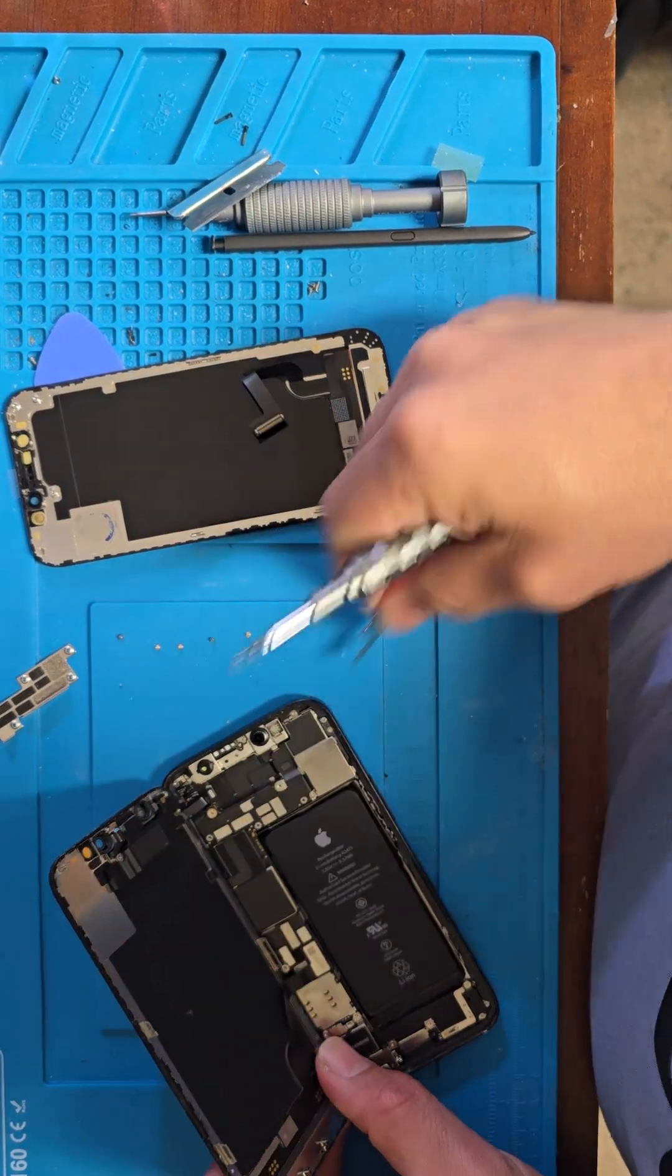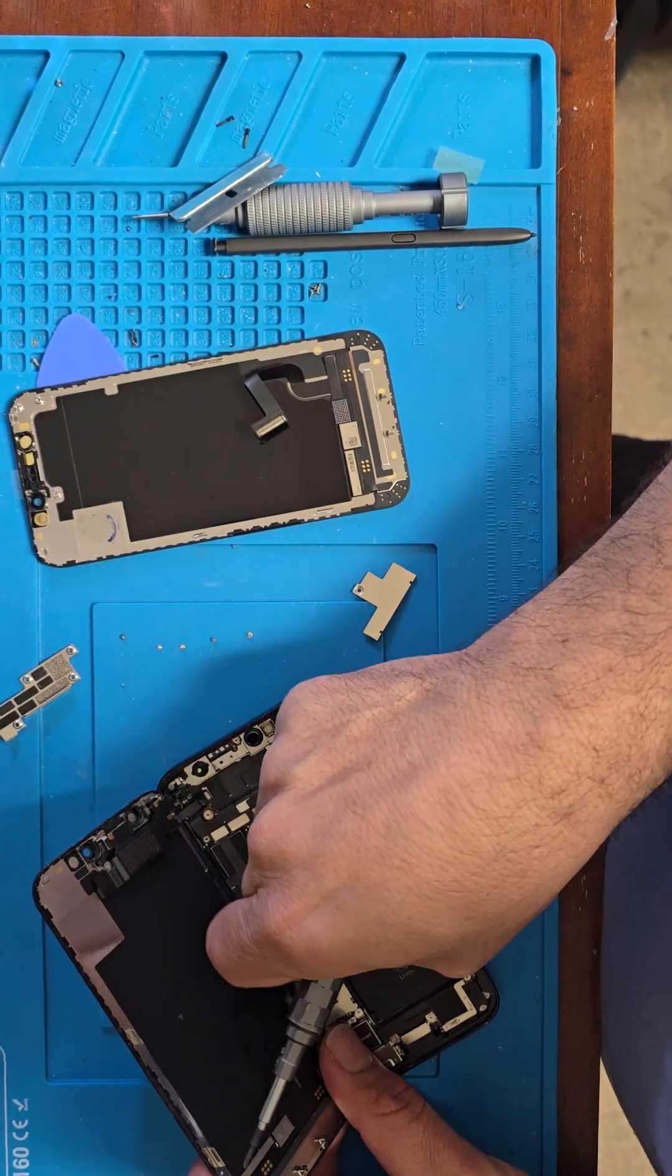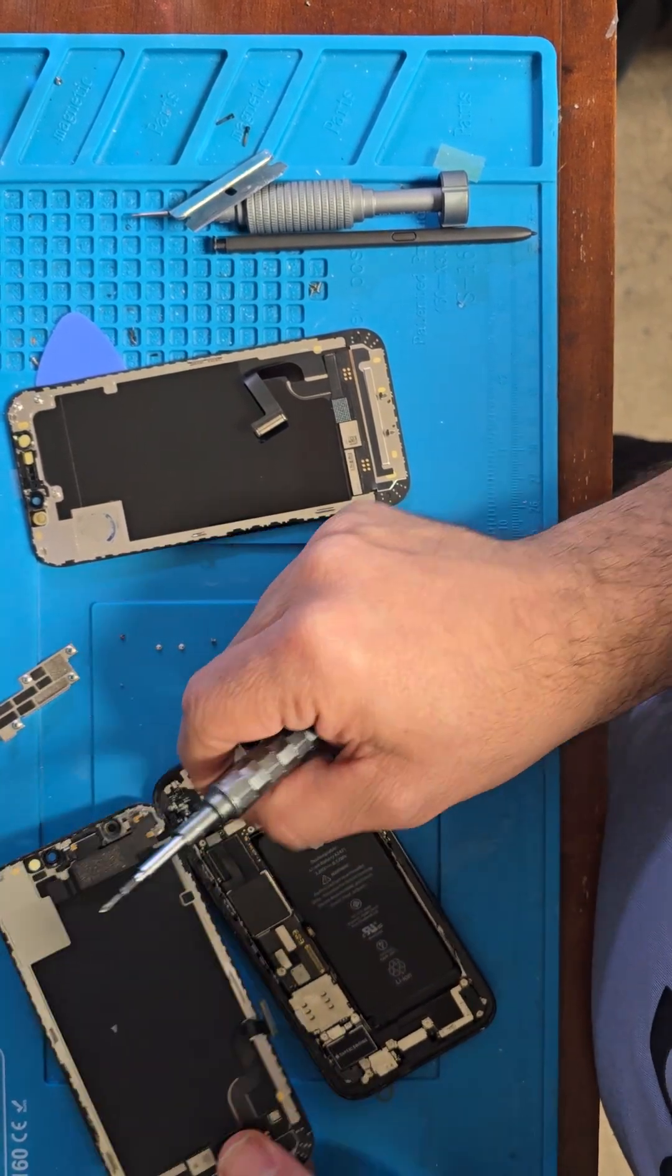After we remove the screw, we remove battery cable connector one and connector two.